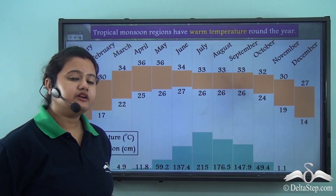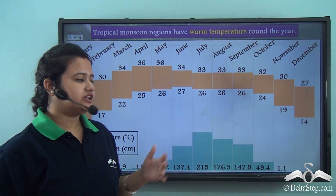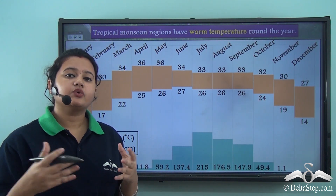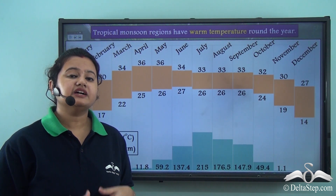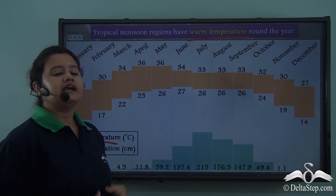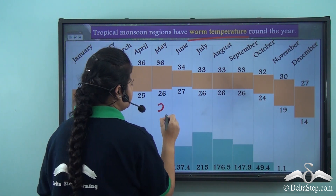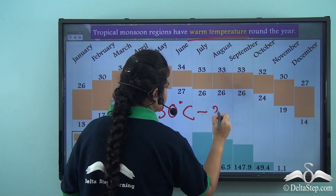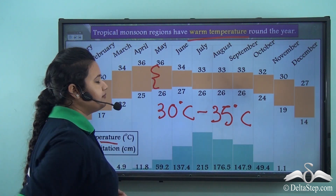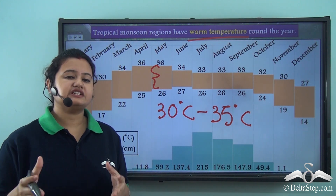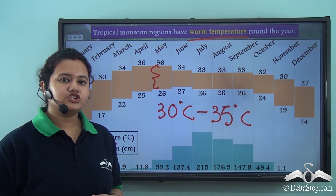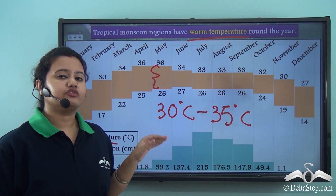This chart also displays the temperature conditions of tropical monsoon regions. Since tropical monsoon regions are located very close to the equator, in the torrid zone, this biome has high temperatures throughout the year. The mean annual temperature ranges from 30°C to 35°C, and the annual range of temperature — the difference between maximum and minimum — varies from 10 to 15 degrees Celsius. The chart shows seasonal variation in both temperature and precipitation patterns.